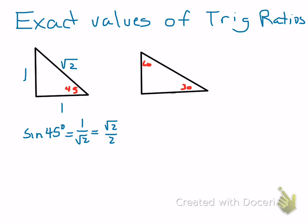The sine of 45 degrees is square root of 2 over 2. Cosine of 45 degrees is also the square root of 2 over 2 because the adjacent side and the opposite side are the same.